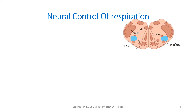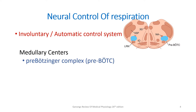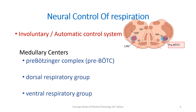Moving on to the involuntary or automatic control system, we have two groups of neurons: the medullary respiratory group and the pontine group. In the medullary respiratory group, we have the pre-Bötzinger complex, which is responsible for the pacemaker activity that initiates respiration. Then we have the dorsal respiratory group and the ventral respiratory group, about which we need to write in more detail.